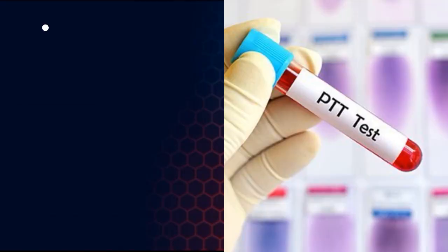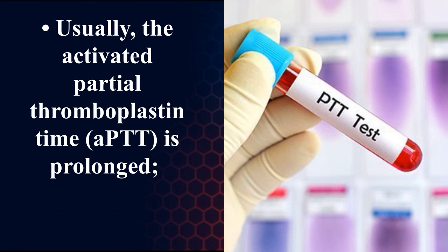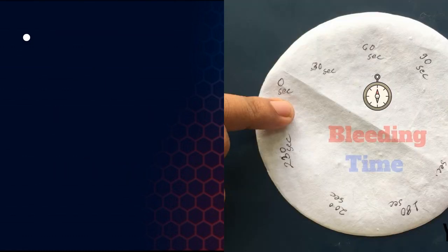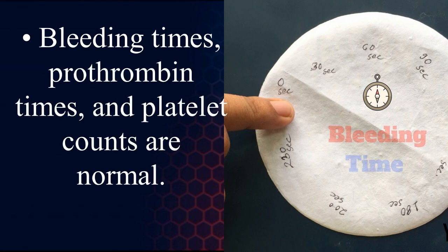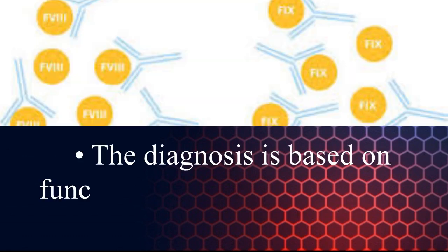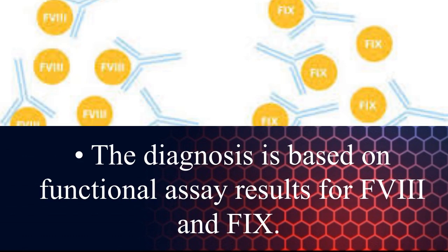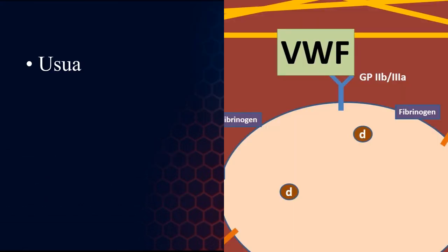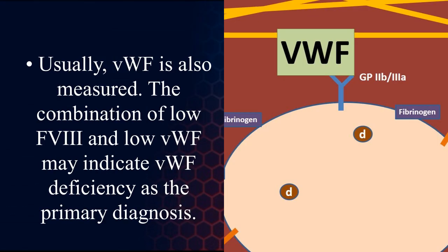For laboratory investigations, the activated partial thromboplastin time (aPTT) is usually prolonged, while bleeding times, prothrombin times, and platelet counts are normal. The diagnosis is based on functional assay results for factor 8 and factor 9.